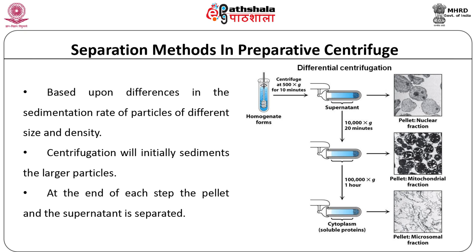To reduce cross-contamination and improve particle separation, the pellet is re-suspended in solvent and re-centrifuged. Further separation of the homogenate is done by centrifuging the supernatant at increased centrifugation speed. For particles with the same mass but different density, high density particles will sediment at a faster rate than less dense particles. Most subcellular organelles can usually be separated by differential centrifugation or zonal methods, provided there is about a tenfold difference in their mass.